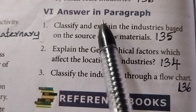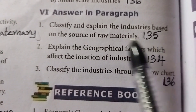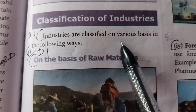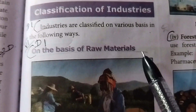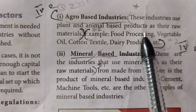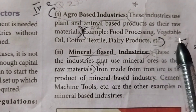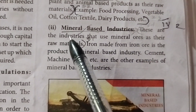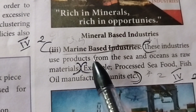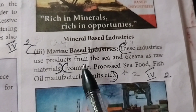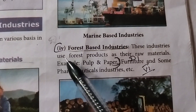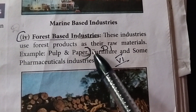Roman numeral six: Answer in paragraph. First — classify and explain the industries based on the source of raw material. Page 135. Industries are classified in the following ways on the basis of raw material: first, agro-based industries use plant and animal-based products as raw material, examples include food processing, vegetable oil, cotton textile, dairy products; second, mineral-based industries use mineral ore as raw material; third, marine-based industries use products from the sea and ocean, examples include processed seafood, fish oil, manufacturing units; fourth, forest-based industries use forest products as raw material, example pulp and paper.